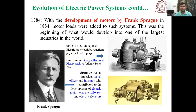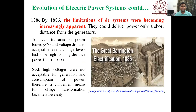With the development of the motor, most industries began working on DC motors. This was the beginning of what would develop into one of the largest industries in the world. Sprague was an American naval officer and inventor who contributed to the development of electric motors, electric railways, and electric elevators. This was the Sprague motor developed in 1890.